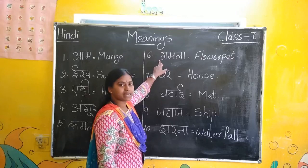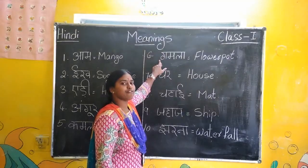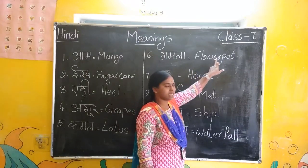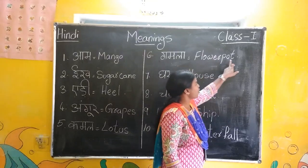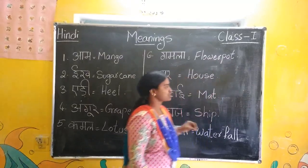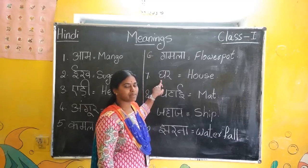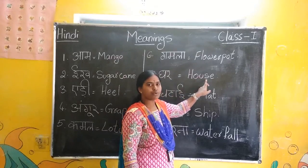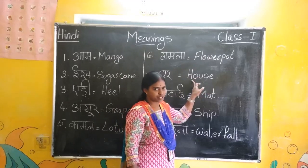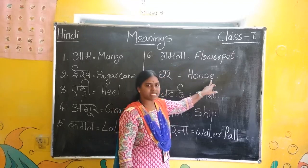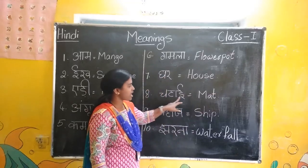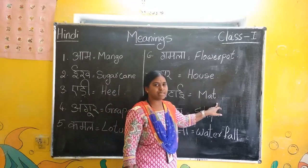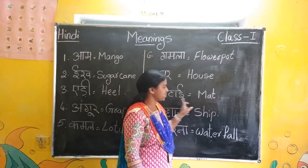Now next one. G-A-M-A-L — G-A-M-A-L means flower pot. F-L-O-W-E-R, flower. P-O-T, pot. Flower pot. Ghar — Ghar means house. H-O-U-S-E, house. Chattai — Chattai means match. M-A-T, match. Chattai — match.